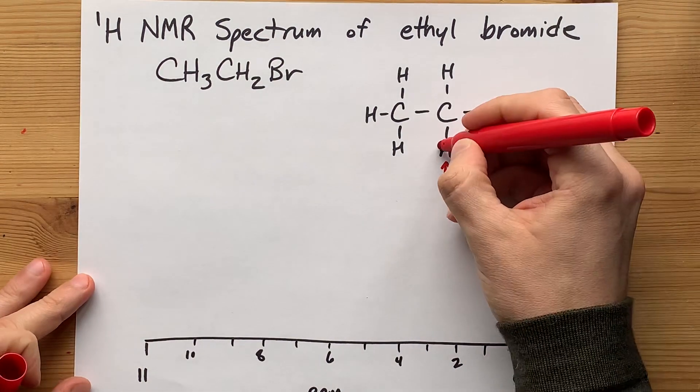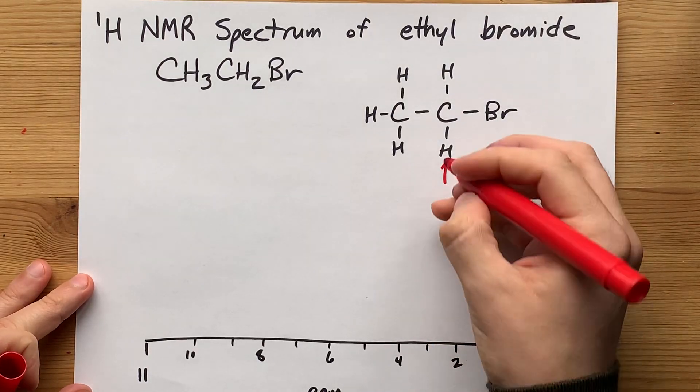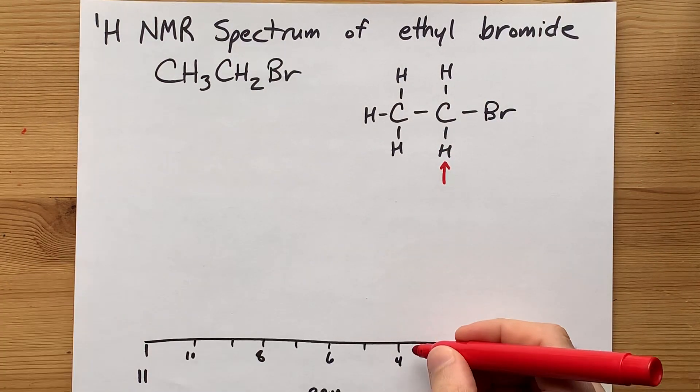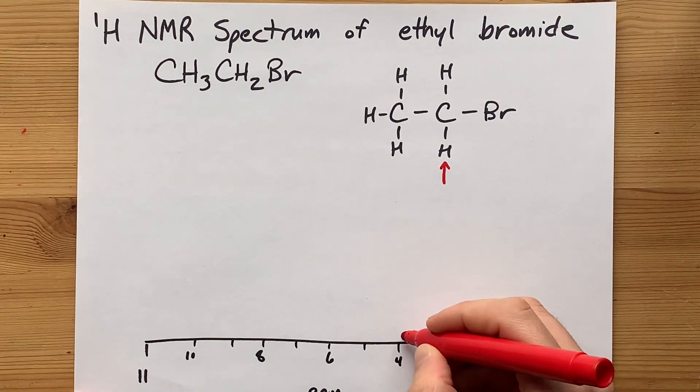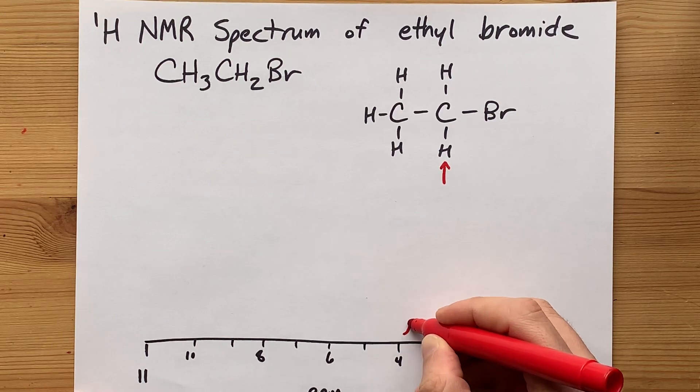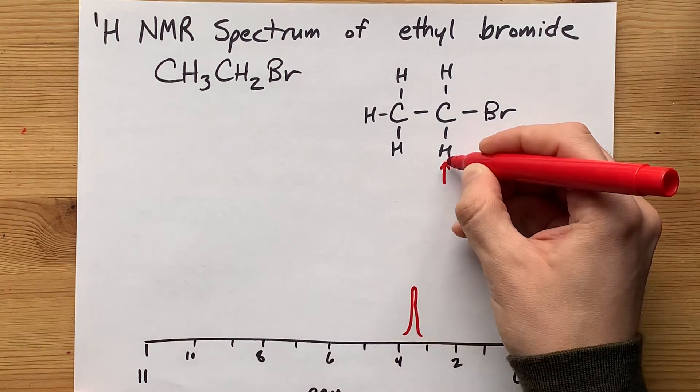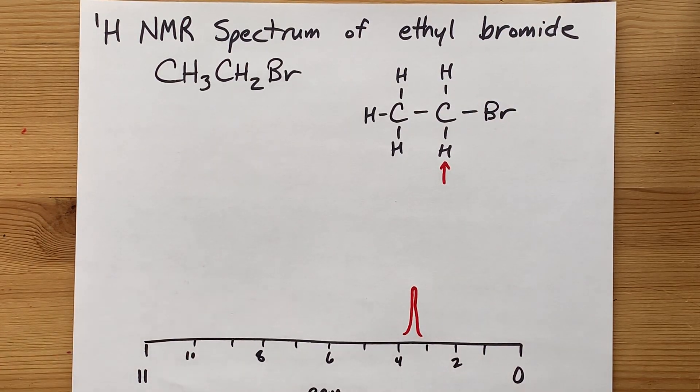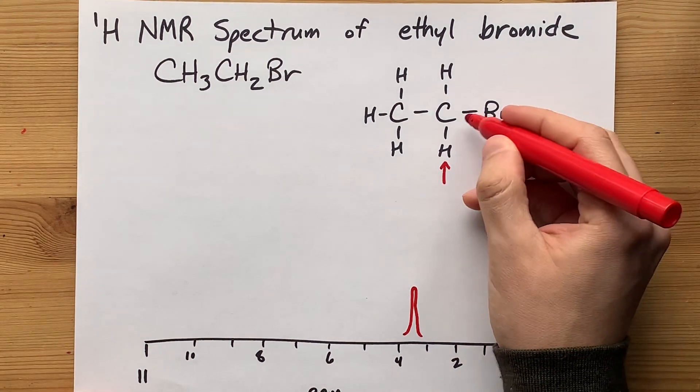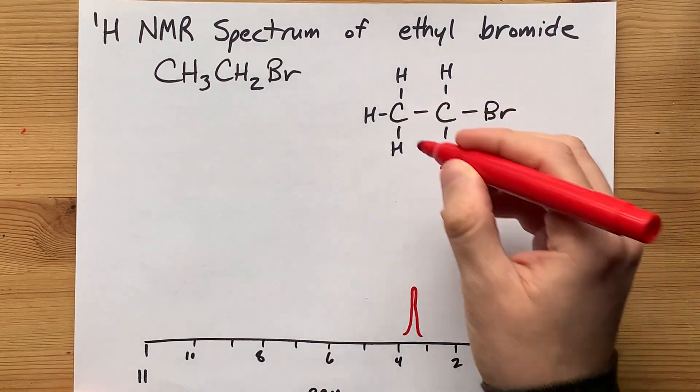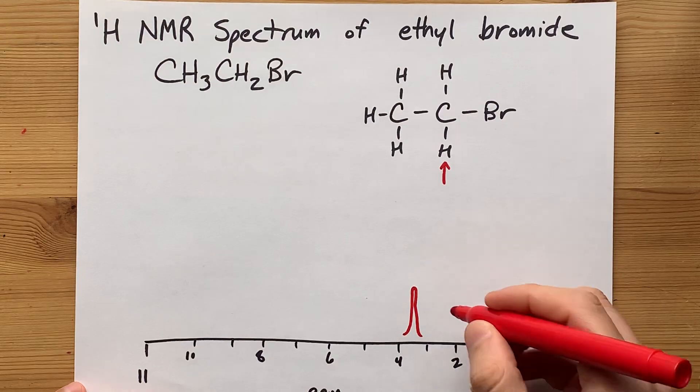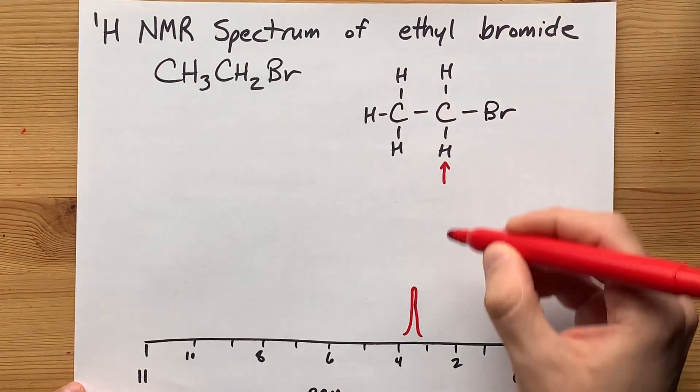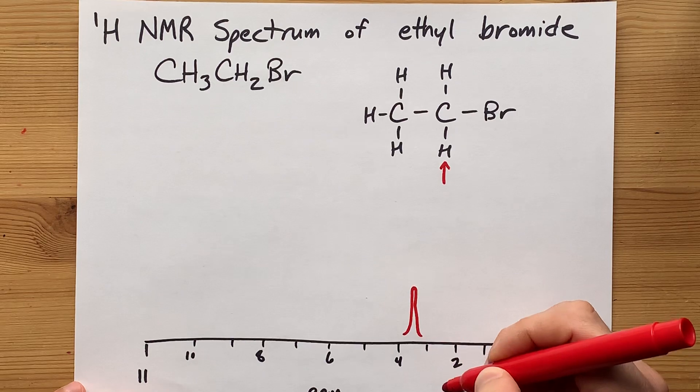So, what you're going to end up with is a peak that is probably at about 3 or 3.5 that represents the two hydrogens that are close to the Br. You're going to end up with a second peak, probably a little closer to zero because it's farther away from the electronegative atoms that needs to be worth 1.5 times as much area under the curve.